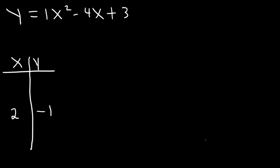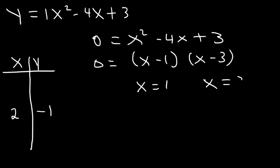Now let's find the x-intercepts. To find the x-intercepts, set y equal to 0 and factor. Two numbers that multiply to 3 but add to negative 4 are negative 1 and negative 3. So it's going to be x minus 1 and x minus 3. Therefore, the x-intercepts are 1 and 3, which means we have the points (1, 0) and (3, 0).